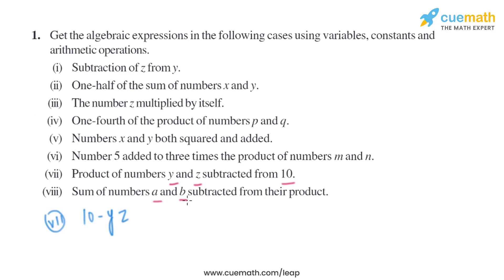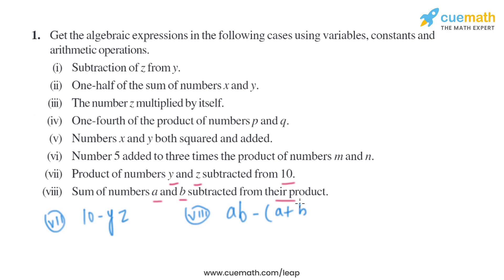In the eighth part, it is given: the sum of numbers a and b subtracted from their product. The sum of a and b can be written as a plus b, and their product as ab. So we are subtracting the sum of a and b from their product, giving us ab minus (a plus b).